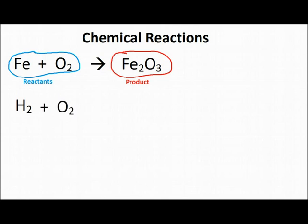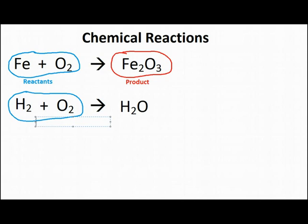Our next chemical reaction is going to be hydrogen plus oxygen. Now, hydrogen and oxygen will actually burn. This is why hydrogen is flammable. Think, you know, Hindenburg. Hydrogen and oxygen will burn to form, actually, water. So, this means that hydrogen and oxygen are the reactants. Water, in this case, is the product.